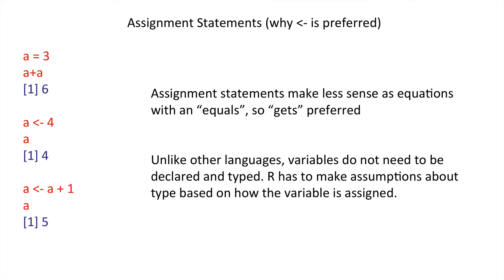Unlike other computer programming languages, variables that we use do not need to be declared and typed at the outset. In other programming languages, we need to inform the code that we are dealing with an integer, for example, or a real, or a character, or a logical. Here in R, we do not have to do that. It makes assumptions about the type depending on how that variable is first assigned.